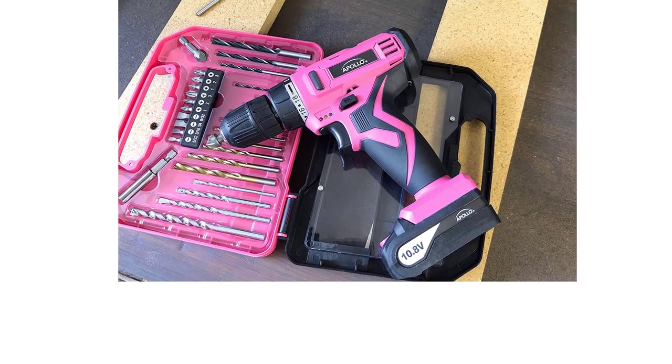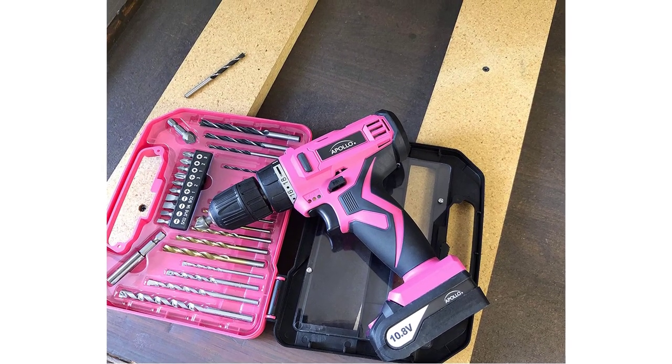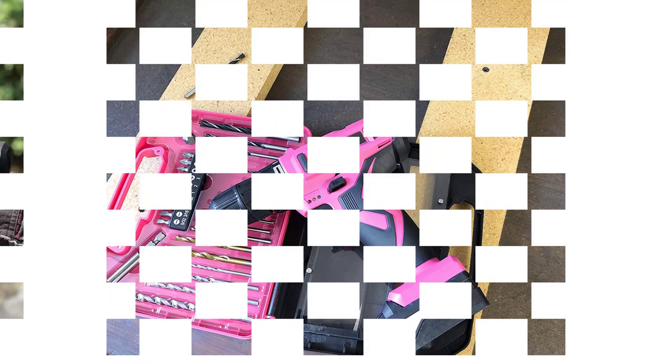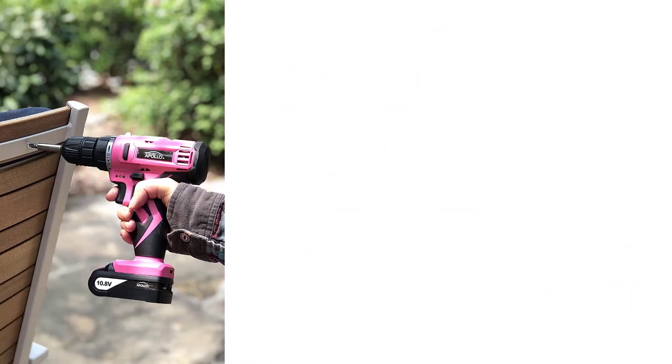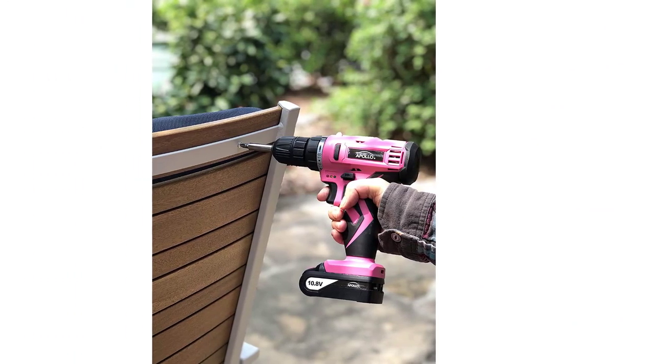This drill comes equipped with 2x2 amp batteries that provide fast charging within 60 minutes. On top of this it has a one-half-inch metal keyless chuck that you can use for a large variety of drill bits, interchanging them without too much hassle.